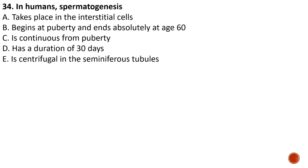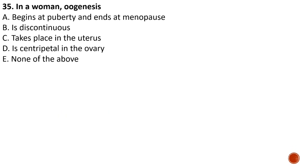Question number thirty-four: in human spermatogenesis — A) it takes place in the interstitial cells, B) it begins at puberty and ends absolutely at age 16, C) it is continuous from puberty, D) has a duration of 30 days, E) is centripetal in the seminiferous tubules. The correct answer is C — spermatogenesis is continuous in males from puberty until the male dies. Question thirty-five: in a woman, oogenesis — the correct answer is B — it is discontinuous, since it begins and ends while the baby is still in the mother's womb.